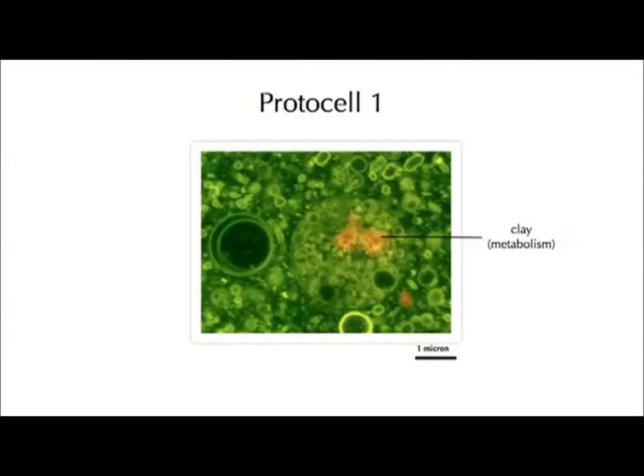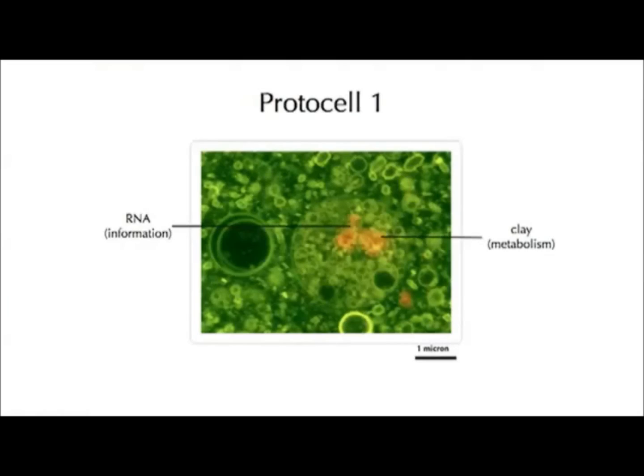What about the other aspects of living systems? We came up with this protocell model that starts with a naturally occurring clay called montmorillonite. This clay forms a surface that is chemically active — it could run a metabolism. Certain molecules like to associate with the clay; for example, RNA, shown in red, which is a relative of DNA and an informational molecule.